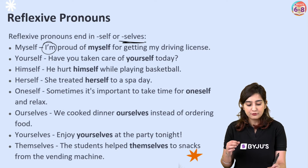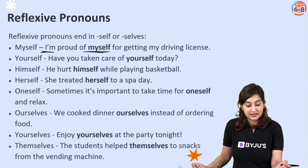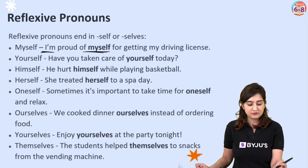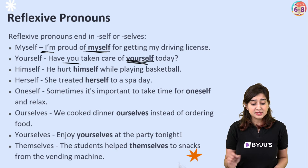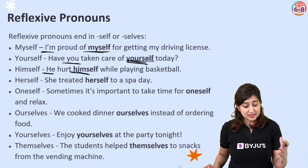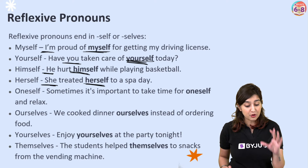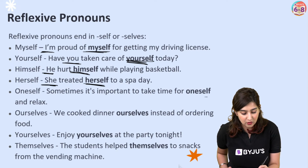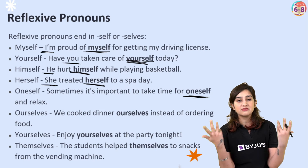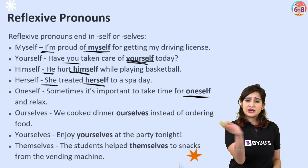'I am proud of myself for getting my driver's license.' — I, myself. 'Have you taken care of yourself today?' — you, yourself. 'He hurt himself while playing basketball.' — he, himself. 'She treated herself to the spa today.' — she, herself. 'Sometimes it's important to take time for oneself and relax.' Here, oneself — we are not referring back to a named subject, but the unspoken subject is 'one', which is general advice for everybody.